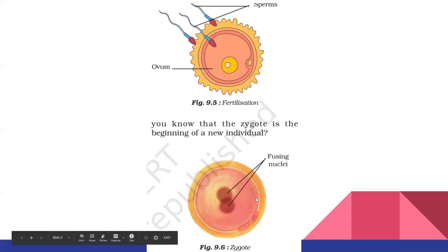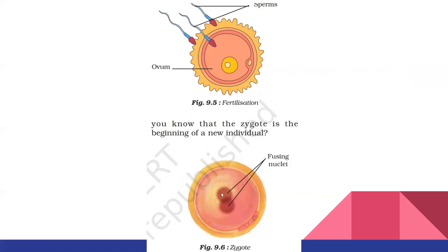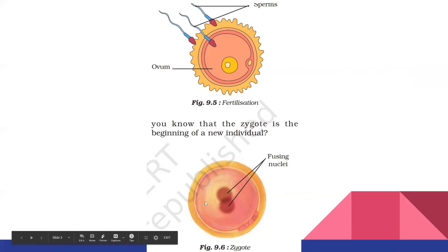Out of those millions, only one sperm will fuse with the nucleus of the ovum. In the second picture, we can see two nuclei — one is the nucleus of the egg cell and another is the nucleus of the sperm cell. Both fuse together and become a single cell. That fertilized egg is called a zygote. So this is the picture of the zygote, which is the fertilized egg. From the zygote, the beginning of the new individual occurs. The zygote is the fertilized egg formed by the fusion of the male reproductive cell sperm and the female reproductive cell ovum.